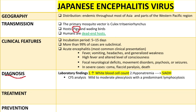Analysis of the cerebrospinal fluid will usually show mild to moderate pleocytosis with predominant lymphocytosis — meaning abnormally high levels of lymphocytes in the cerebrospinal fluid. On imaging, brain MRI will usually show hyperintense lesions in the thalamus, which is specific for the Japanese encephalitis virus and helps differentiate it from other conditions.